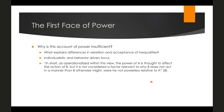As Gaventa writes on page eight: the power of A is thought to affect the action of B, but it is not otherwise considered a factor relevant to why B does not act in a manner that B otherwise might, were he not powerless relative to A. In more normal English: this account of power doesn't tell us why B does not act — it doesn't explain why B prefers different options or give us a full explanation of why B's behavior would be otherwise. We need something more to flesh this out.